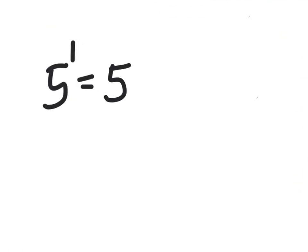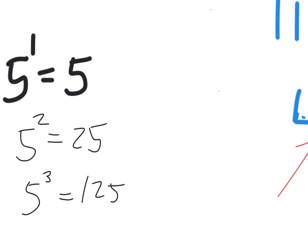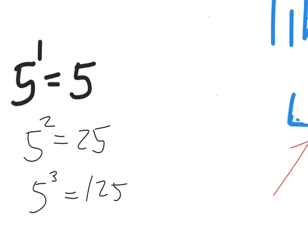5 to the 1st is 5. 5 to the 2nd is 25. But 5 to the 3rd is one that came up on your last test, and you just probably need to remember it. What is it? 125, good. But let's do a few other biggies.